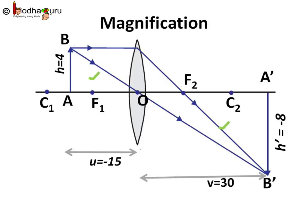For example, in case of convex lens when the object is between C and F, the image formed is real, inverted and enlarged.